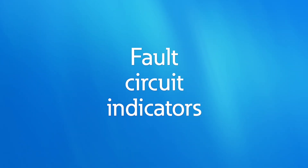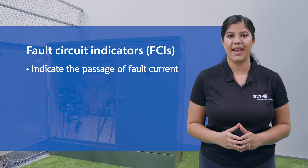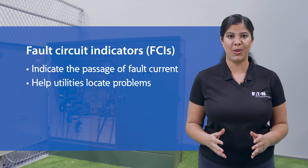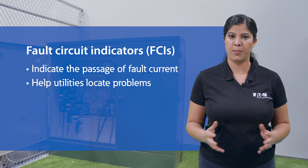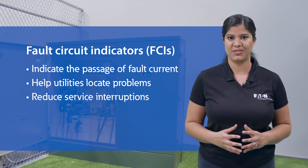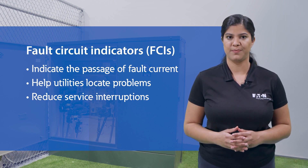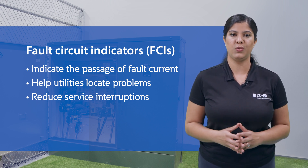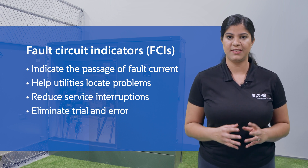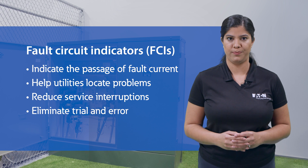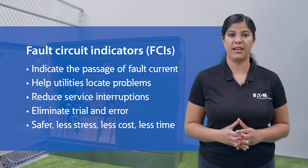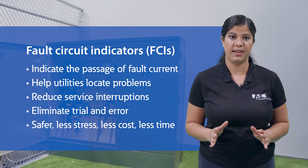Faulted circuit indicators, or FCIs, are devices that indicate the passage of fault current. They're an effective tool in helping utilities locate a damaged cable or a faulted area in their power system. By helping to identify the section of cable that has failed, FCIs reduce service interruptions. Without this tool, utility personnel would have to do trial and error sectionalizing of the system to narrow down the location of the fault. These fault-chasing procedures can be hazardous to personnel, place stress on the electrical system, and are costly and time consuming.